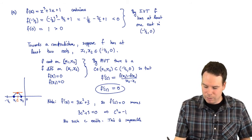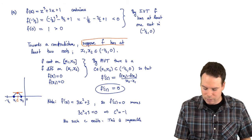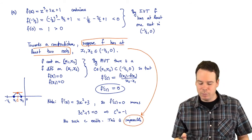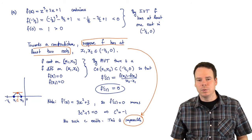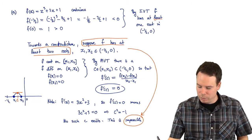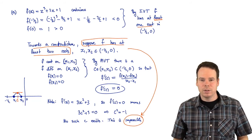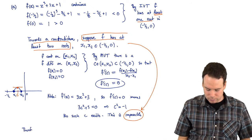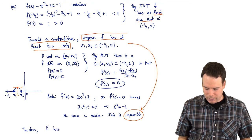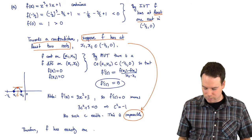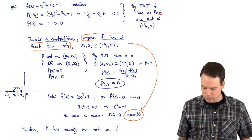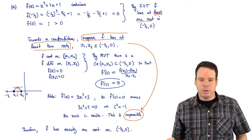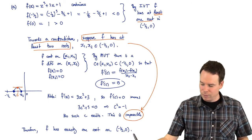This impossibility stemmed from our assumption. Our assumption was that f had at least two roots, and from that we got something impossible. So our assumption had to be wrong — f cannot have at least two roots. But we already know it has at least one root. So it has exactly one root. The intermediate value theorem guaranteed existence, and the mean value theorem showed there couldn't be two or more roots.